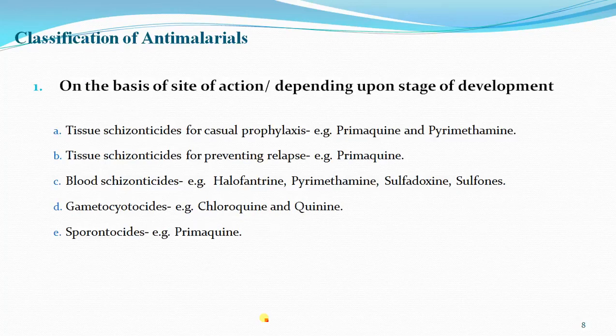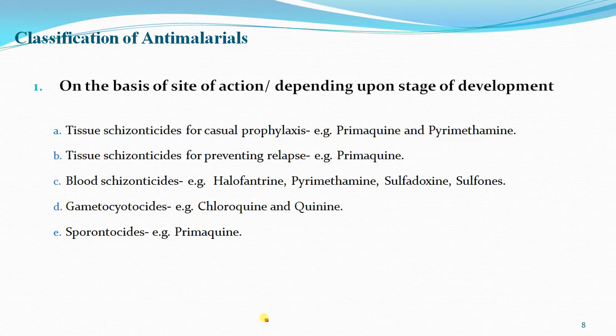Anti-malarial drugs are classified on the basis of site of action and depending upon the stage of development. The first one is sporozytocides — against the sporozoites, used for prophylactic purposes; no ideal agent is currently available. Against tissue schizontocides, these interfere with the growth and division of merozoites. These are divided into three: exo-erythrocytic (pre-erythrocytic), active against merozoites in the liver — example is primaquine; erythrocytic stage drugs active against the erythrocytic stage — example is chloroquine; and third, schizontocides against both phases — example is pyrimethamine.